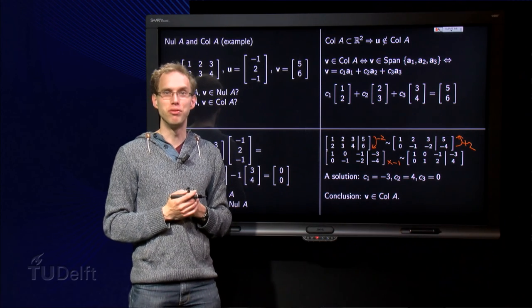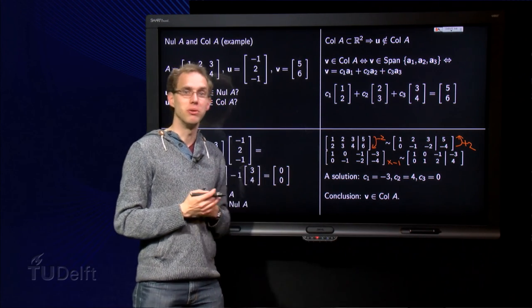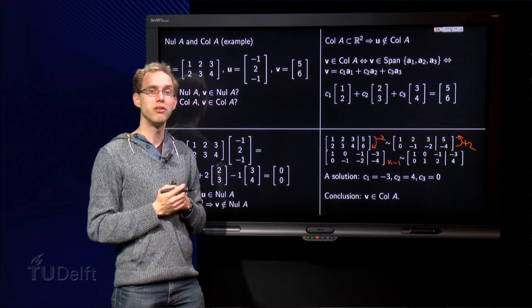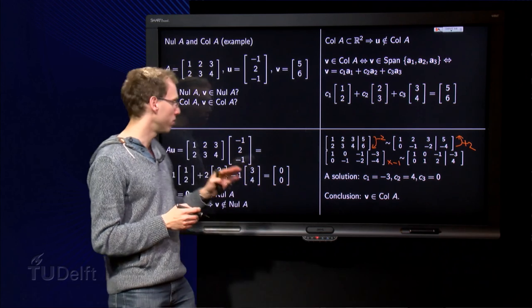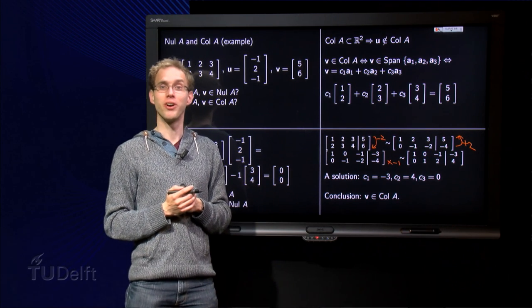So it is some effort to check. But well, you have done some row reductions before, so you can do this. And now you know how to find out whether a vector is in the column space, and you can also figure out whether a vector is in the null space or not.